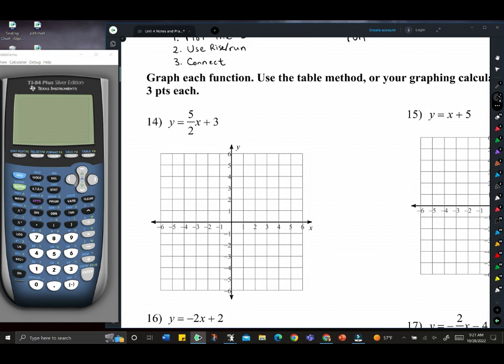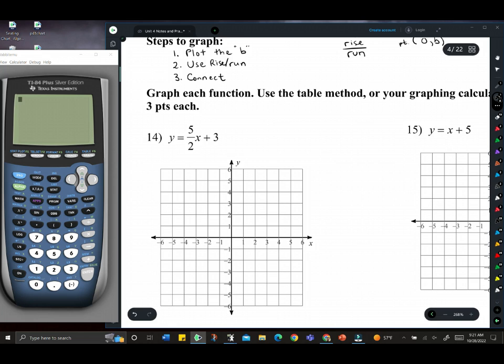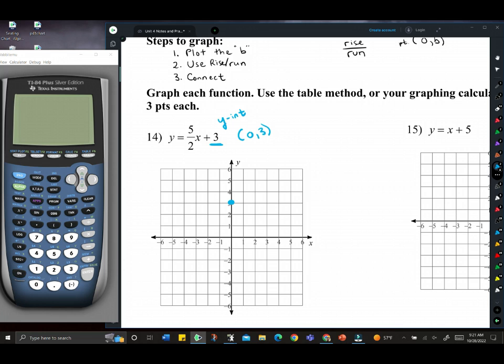A few ways to do this. First, if we use the steps above, the first step is to plot the b value. So I'm going to highlight that here in blue, this 3, that's the y-intercept. What that means is we have the point 0, 3 on our graph. This is why we did graphing before. So we're going to plot that point. There it is. Over 0, up 3. It's the y-intercept because it crosses that y-axis.